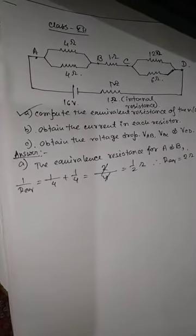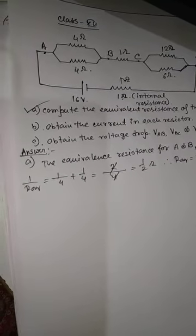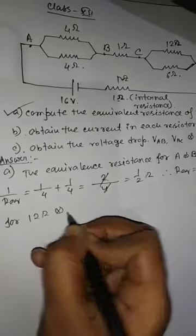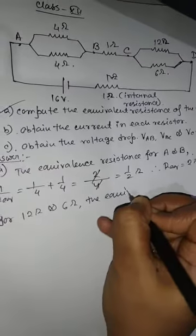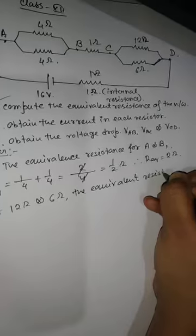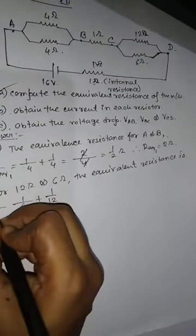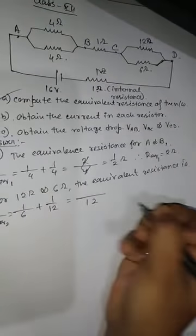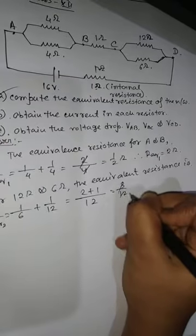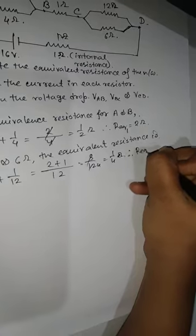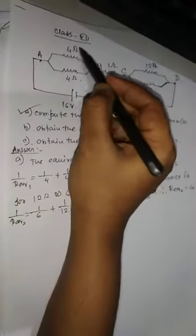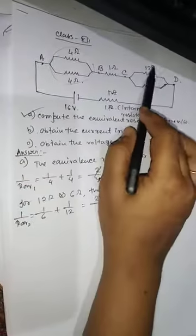In the same way, the 12 ohm and 6 ohm resistors are in parallel. For 12 ohm and 6 ohm: 1 by R equivalent 2 equals 1 by 6 plus 1 by 12, that is 2 plus 1 = 3 by 12, which simplifies to 1 by 4. Therefore R equivalent 2 will be 4 ohm. Now the 4 ohm pair is replaced by 2 ohm, and the 12 and 6 ohm pair is replaced by 4 ohm.